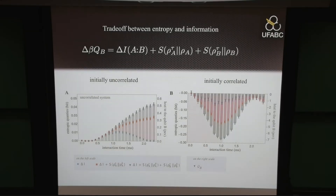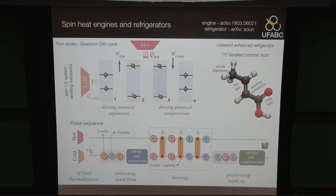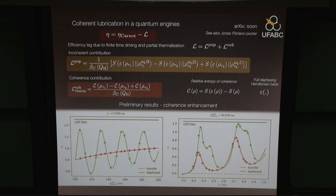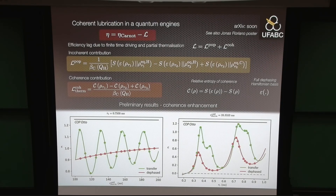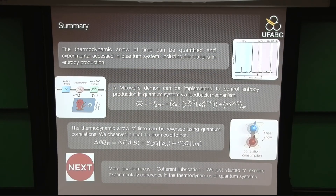We derived a trade-off for the heat current in terms of information quantities, showing that entropy production can be compensated by the variation of the mutual information. The amount of heat exchanged between the two systems is bounded by the variation of the mutual information of the whole system. When correlations are consumed, the effect vanishes. But if you have a source of correlated states, you can use it as a resource to transfer heat between parts of a quantum device — one possible application for quantum technology. We are now starting to investigate more quantumness: coherent lubrication and coherent effects in quantum thermodynamic systems.